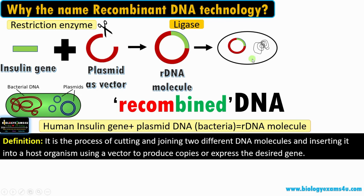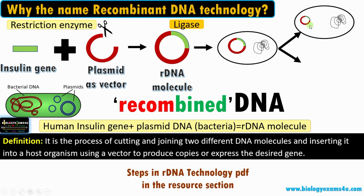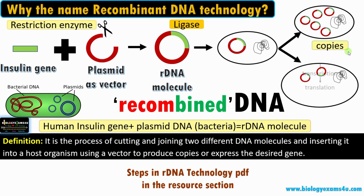The next step is transferring this recombinant DNA molecule into a host organism — the most common host is bacterium E. coli. This process is called transformation, and there are different gene transfer methods. We have the recombinant DNA molecule inside the bacterium for two reasons: first, it will replicate and make copies of that particular gene for further research or DNA sequencing; second, for the production of proteins — the gene is transcribed and translated inside the host, forming the protein.